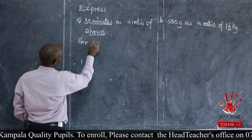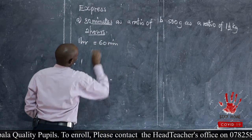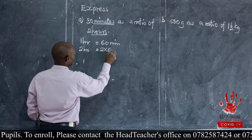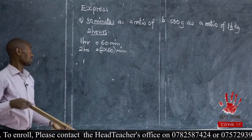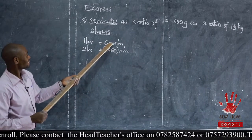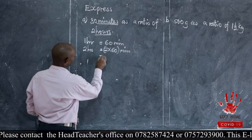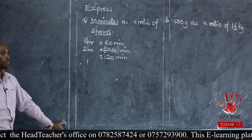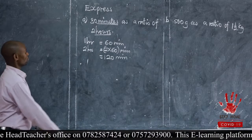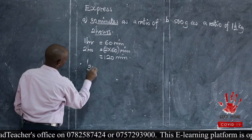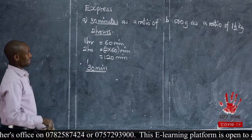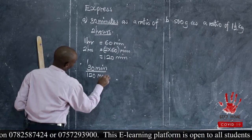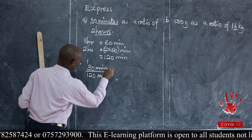We know that one hour is equal to 60 minutes. What about two hours? Two hours will give us two times 60 minutes, which equals 120 minutes. Now that we have the same units, it becomes very simple. We are going to express 30 minutes as a fraction of two hours, and two hours has given us 120 minutes. Minutes and minutes will cancel off.